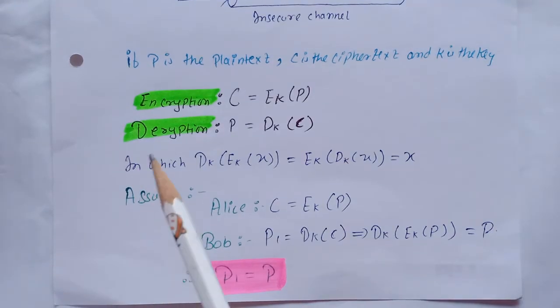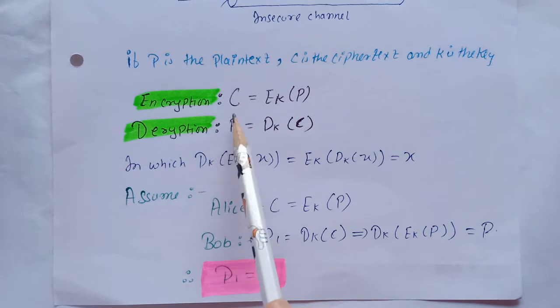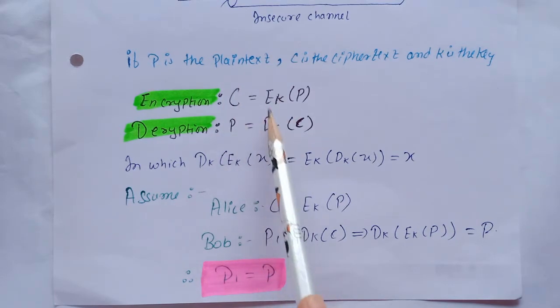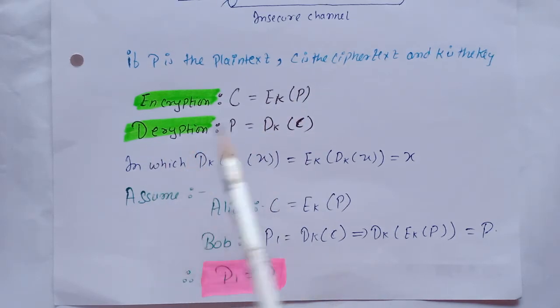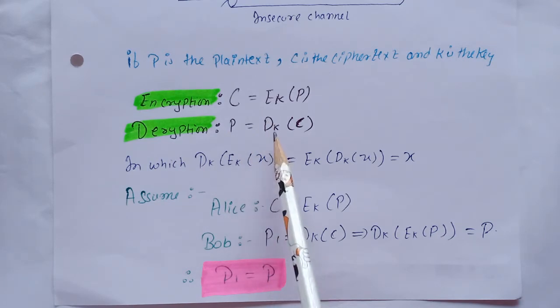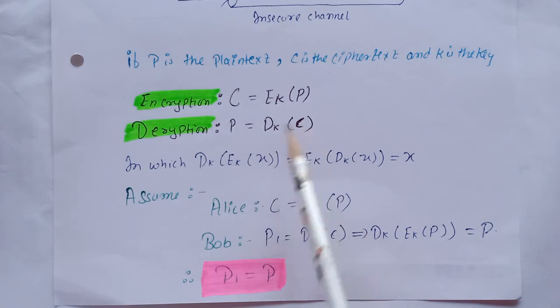If P is plain text, C is cipher text, and K is the key, then during encryption we get the cipher text C = Ek(P). During decryption we get the plain text using the same key K, which operates on the cipher text.